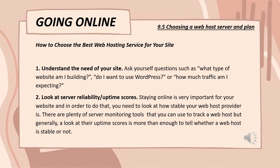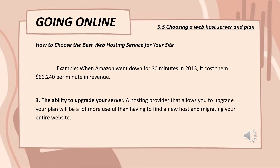Second is to look at server reliability or their uptime scores. Staying online is very important for your website, and in order to do that, you need to look at how stable your web host provider is. There are plenty of server monitoring tools you can use to track a web host, but generally uptime scores are more than enough to tell whether a web host is stable or not. For example, when Amazon went down for 30 minutes in 2013, it cost them $66,140 per minute in revenue.